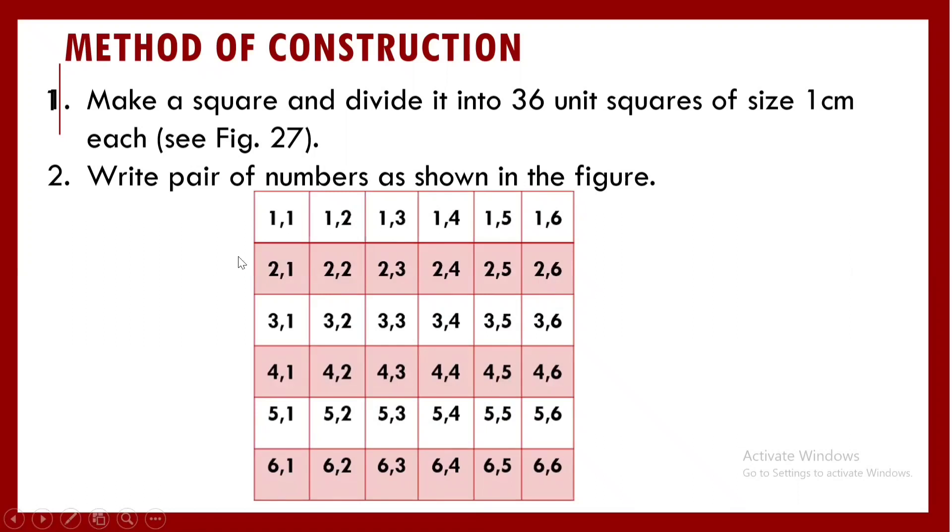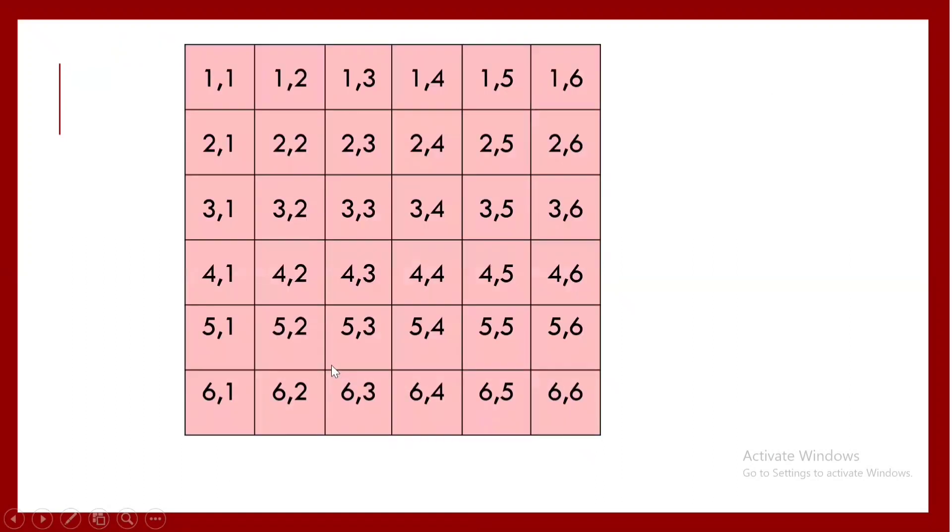So this is what I want to make: 1,1, 1,2, 1,3, 1,4, 1,5, 1,6, 2,1, 2,2, 2,3, 2,4, 2,5, 2,6, 3,1, 3,2, 3,3 through 3,6, 4,1, 4,2 through 4,6, 5,1, 5,2 through 5,6, and 6,1, 6,2 through 6,6. Now if you can clearly see, this is the outcomes when two dice are thrown, isn't it?